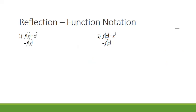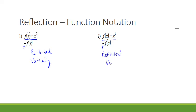A vertical reflection is shown in function notation by putting a negative in front of f of x. So this was f of x equals x squared, but because we're saying it's now negative f of x, it was reflected vertically. Same here — the original was x to the third, but now we're saying negative f of x, so it was reflected vertically. We typically do not run across horizontal reflections, but if you ever see something like this, that would be a horizontal reflection.